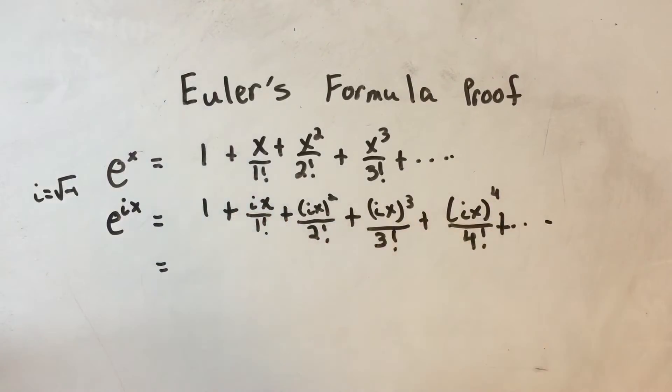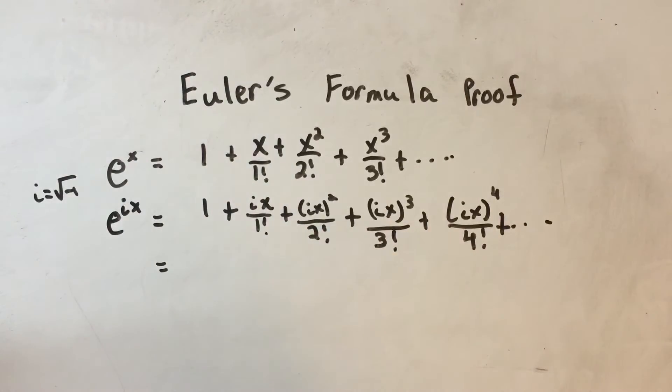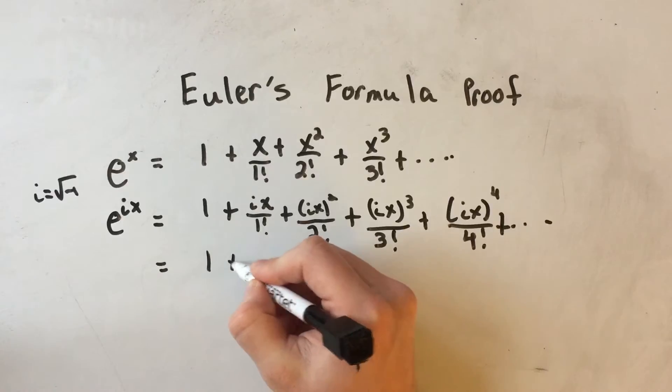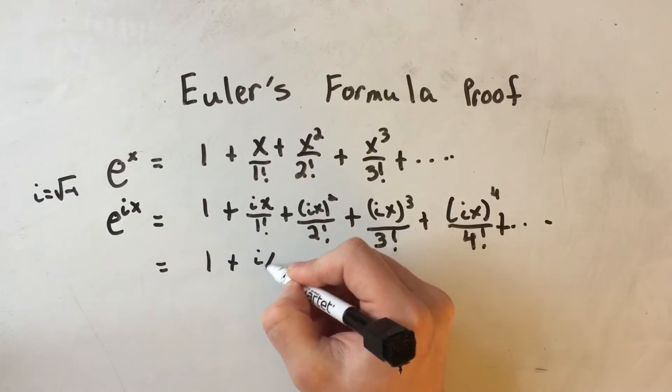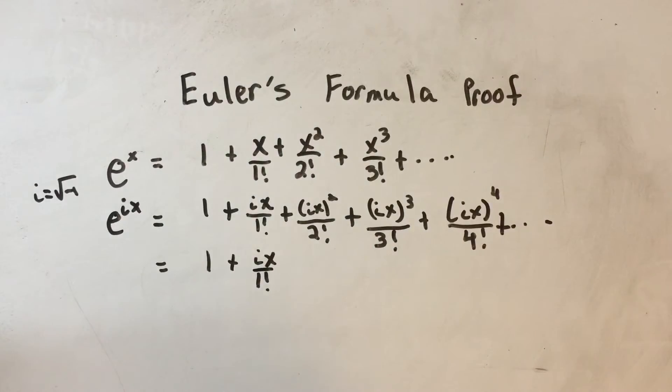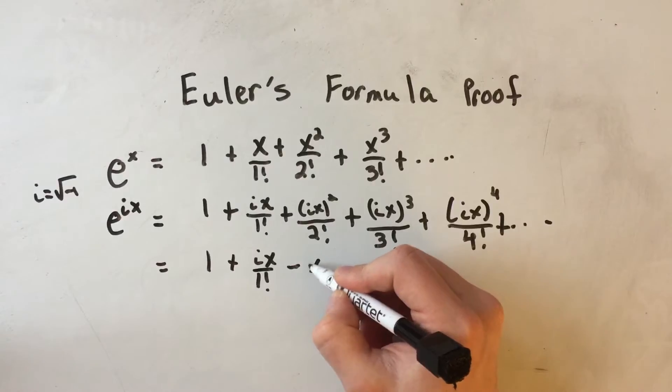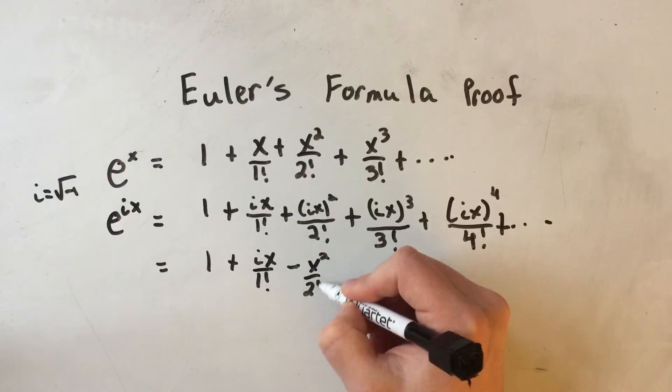Now if I start simplifying this, well I can't do much with the ix over 1 factorial, but i squared, i squared is negative 1, so this is actually minus x squared over 2 factorial.